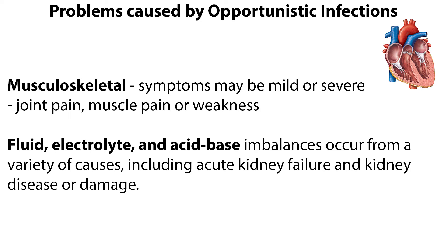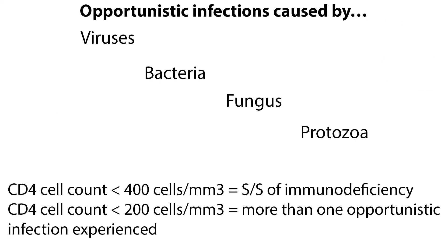Fluid, electrolyte, and acid-base imbalances occur from a variety of causes, including acute kidney failure and kidney disease or damage. AIDS-related infections are called opportunistic because the organisms causing infection are not ordinarily pathogenic to a healthy immune system. Opportunistic infections can be caused by viruses, bacteria, fungus, and even parasites.